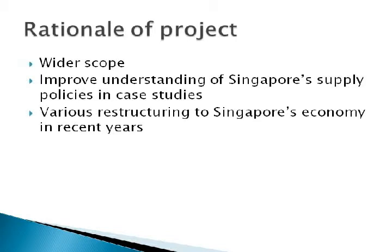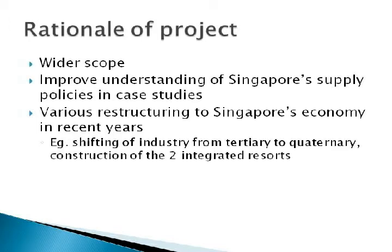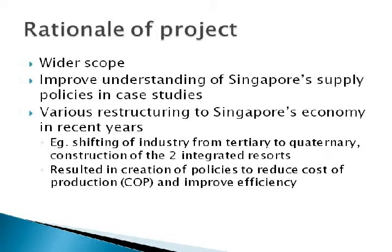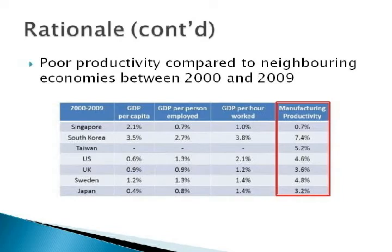In recent years, Singapore's economy has changed a lot. For example, it has shifted its industry from a tertiary one to a quaternary one and it has welcomed its two new integrated resorts. These changes have prompted the Singapore government to come up with policies that aim to reduce the cost of production and to improve the efficiency of the industry. Singapore has also experienced a low level of productivity compared to other economies. As seen from the table, between the year 2000 and 2009, Singapore's growth in manufacturing productivity is a mere 0.7%.